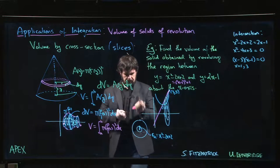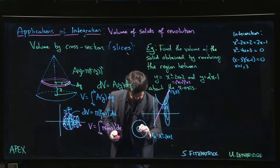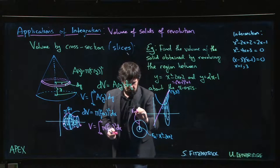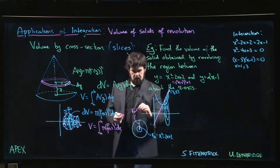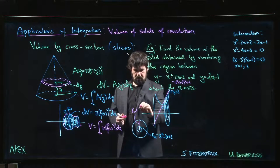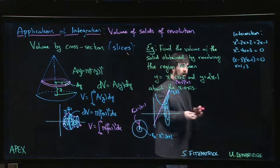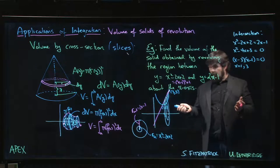The outer radius here is going to be the 2x minus 1. All right, so far, so good.